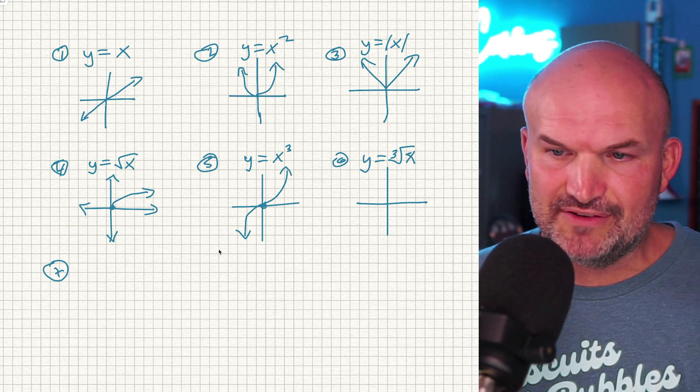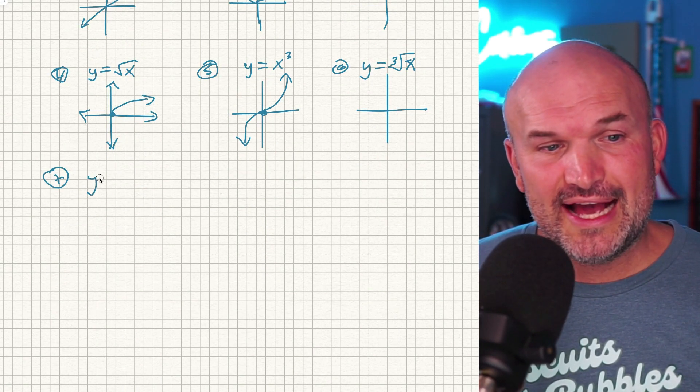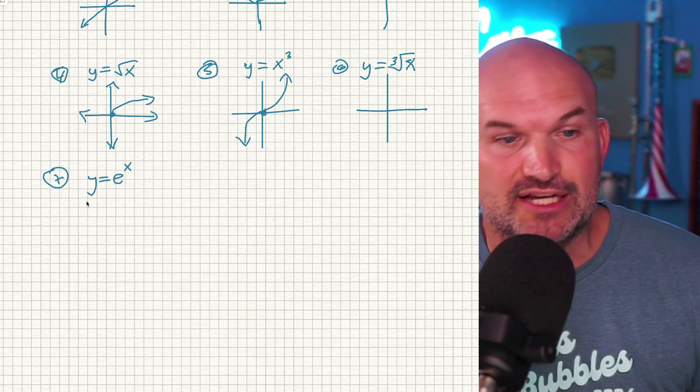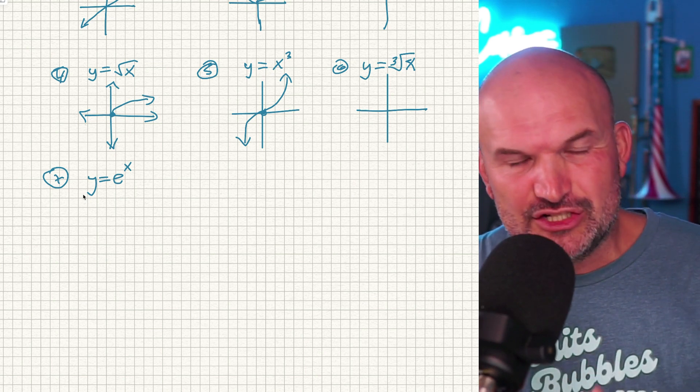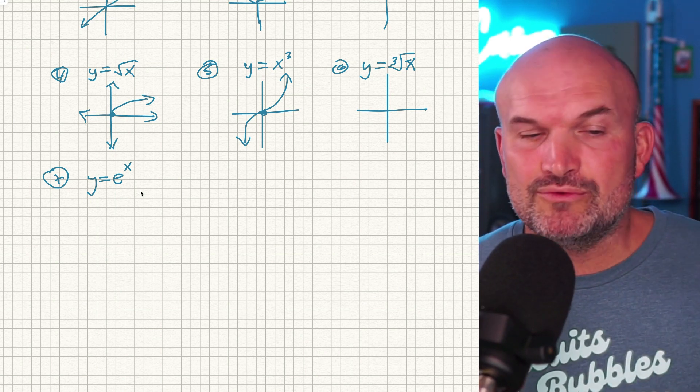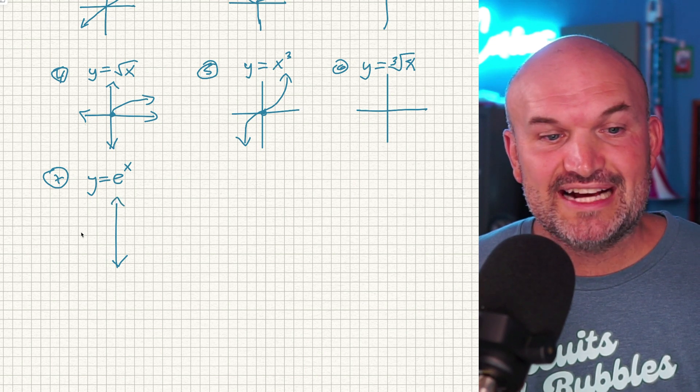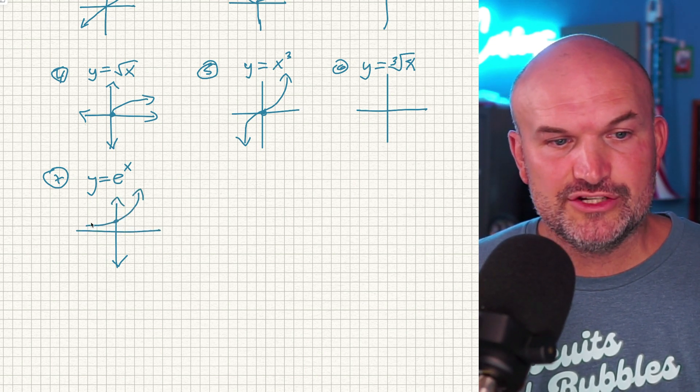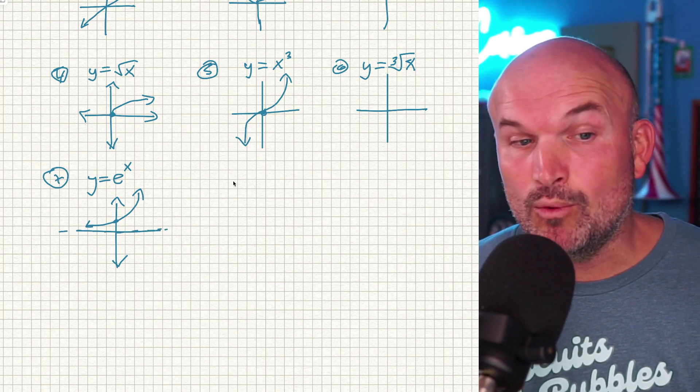Now let's go ahead and move on to number seven, which is going to be one that students forget. The exponential function can be used as e to the x or you could use like two to the x. It doesn't really matter what the base is. That's going to affect the shape a little bit. But the main characteristics are always going to be the same as long as there's no transformation. So the exponential function is going to look like this. And just remember, there is a nice little horizontal asymptote there at y is equal to zero.